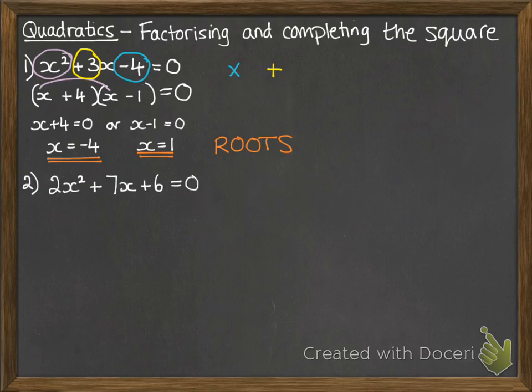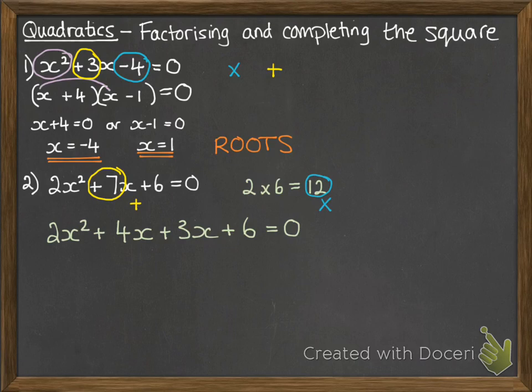Next one. We have a number in front of the x squared. Now there are lots of different methods of doing this. I'll show you the way that I go through it, but if you do it in a different method that's no problem. So first of all, take the first and last numbers there, the 2 and the 6. Multiply them together to make 12. Now we want to find two numbers that multiply to make 12 and add to make 7. So that would be a 4 and a 3.